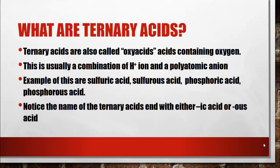Now let us know what ternary acids are. Ternary acids are also called oxyacids — acids containing oxygen. They are usually a combination of a hydrogen ion and a polyatomic anion. Polyatomic anions are ions that contain two or more atoms carrying a single charge. Examples include sulfuric acid, sulfurous acid, phosphoric acid, and phosphorous acid. Notice that ternary acid names end with either '-ic acid' or '-ous acid'.